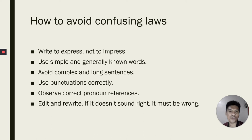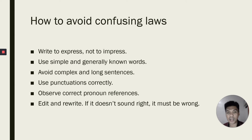So, clearly we have confusing laws, and these confusing laws can be clearer if we just follow some basic tips in good and effective legal writing. First, we should write to express, not to impress. The purpose of drafting laws is to make sure that people are informed and that they are able to follow and observe these laws on their own without need of going to a lawyer or going to court. So, the law should side with simplicity rather than complexity.